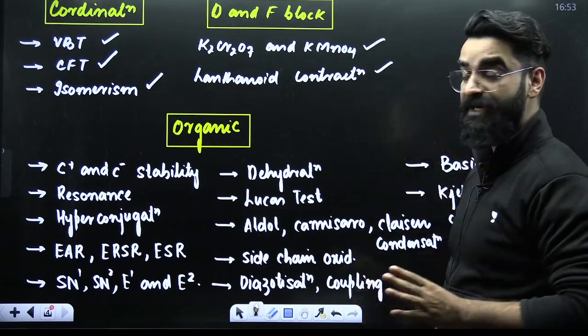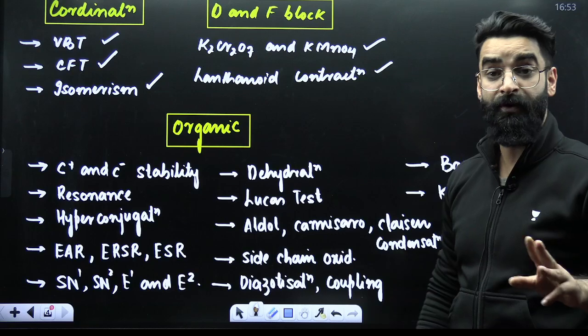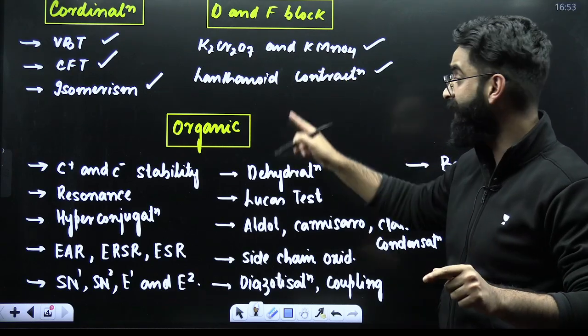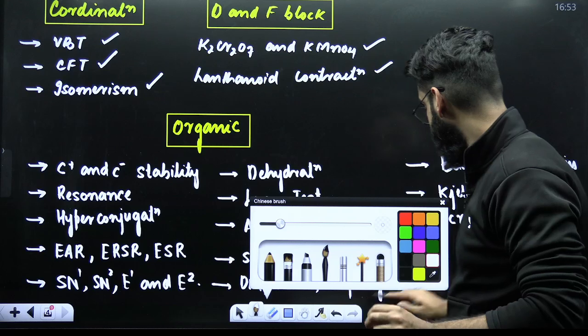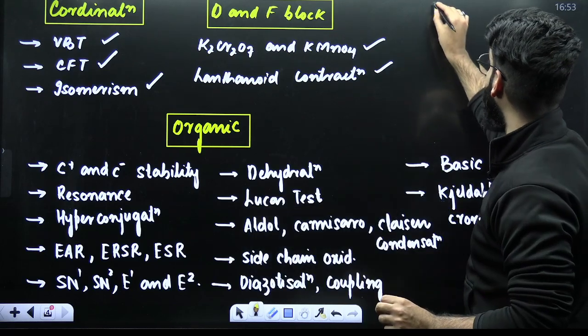D and F block. Your KMnO4, K2Cr2O7. Two important compounds. Very important compounds. Do them from NCERT directly. And your lanthanoid contraction. One thing guys, which I'll be adding over here, that is your thermochemistry part.